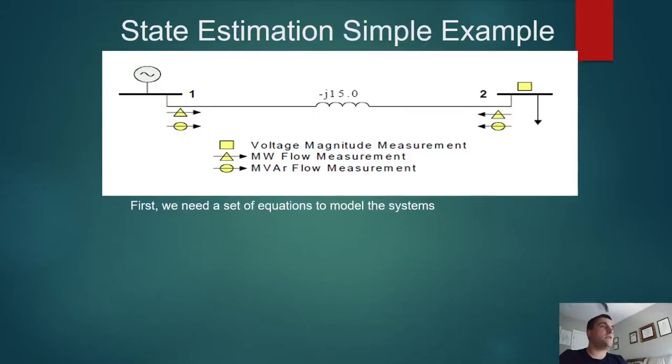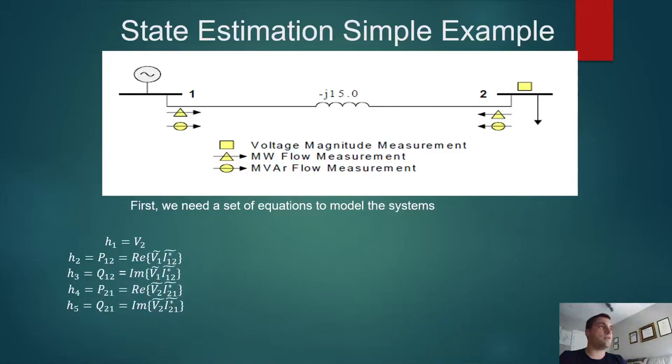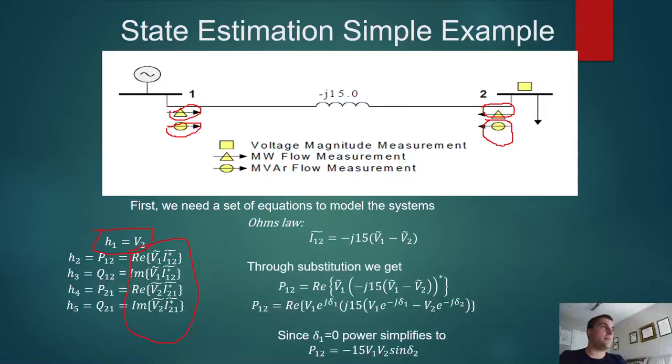First, we need a set of equations to describe the physics behind this system. We have our first z, which is equal to just the voltage, so that's h1 equals v2. It's pretty simple. The others, we're taking the real part, so we have four power measurements. Power 1, 2, real power 1, 2, reactive power 1, 2, real power 2, 1, reactive power 2, 1, which is simply nothing more than the formula we took earlier with real and imaginary components taken respectively. Just by using Ohm's law, we can get the current. We don't need to measure it directly, just by taking the differences between the two voltage phasors and multiplying by the impedance on the line. Through substitution, we get power 1 and 2, and then we take the real component of it to get the real power on the first line, and then the imaginary power on bus 1.